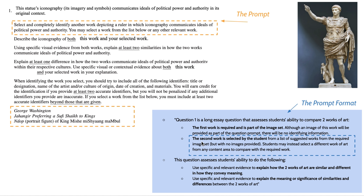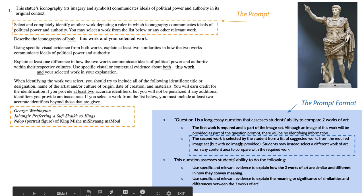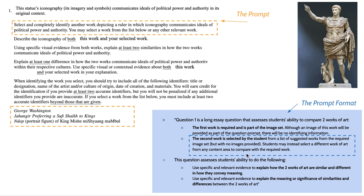For this exam, it will be open book and open notes, so you can do a quick image search if you don't remember what something looks like — that safeguard is in place for this year only. You can also select a different work of art from any content area to compare with the required work, including artworks outside of units one through six. You can reference something from Global Contemporary if you want, as long as it's an AP artwork for the 2020 exam.